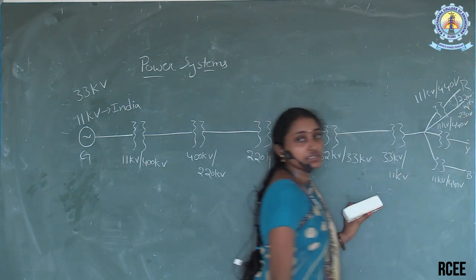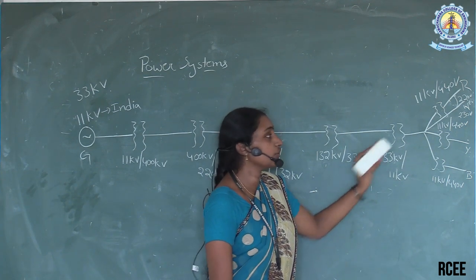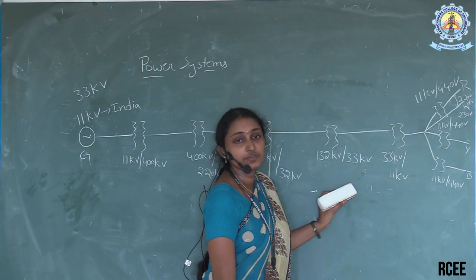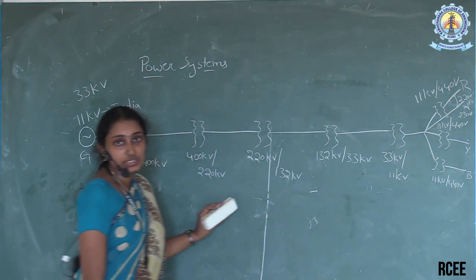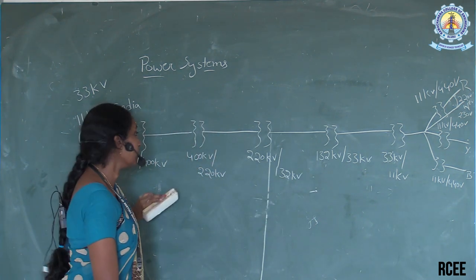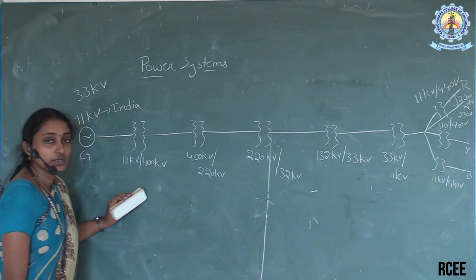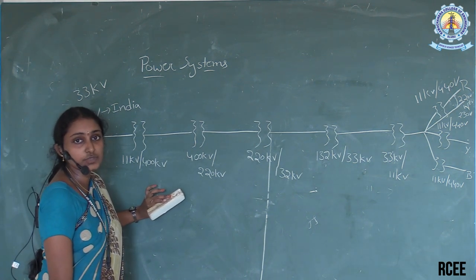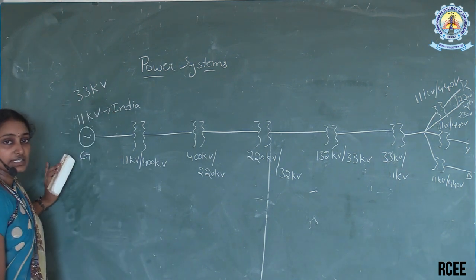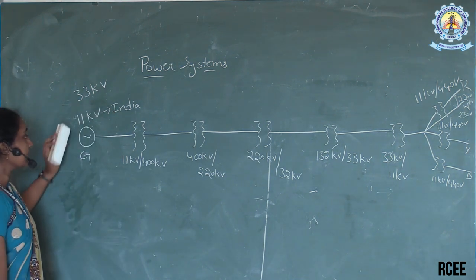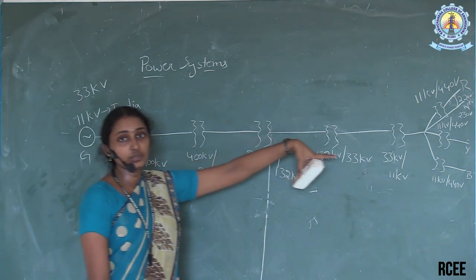For our home appliances, that means residential purpose, we use single-phase supply. For domestic industrial purposes, we use three-phase supply. For agricultural purposes, we also use three-phase supply. So at the generating station, 11 kV is supplied, and at our load ends we get 230 volts.